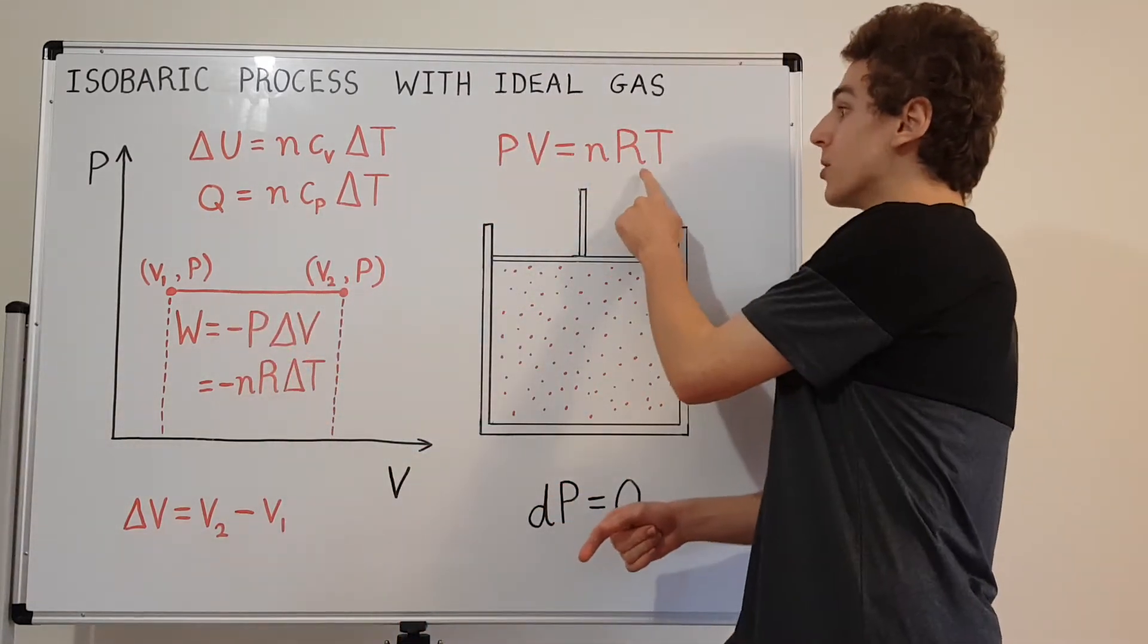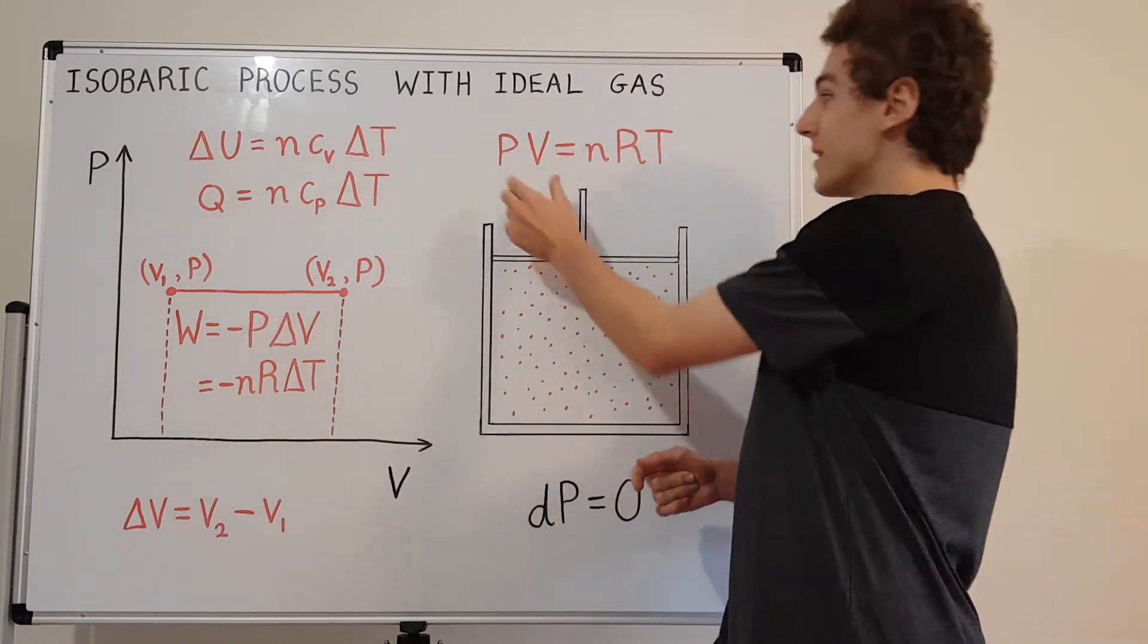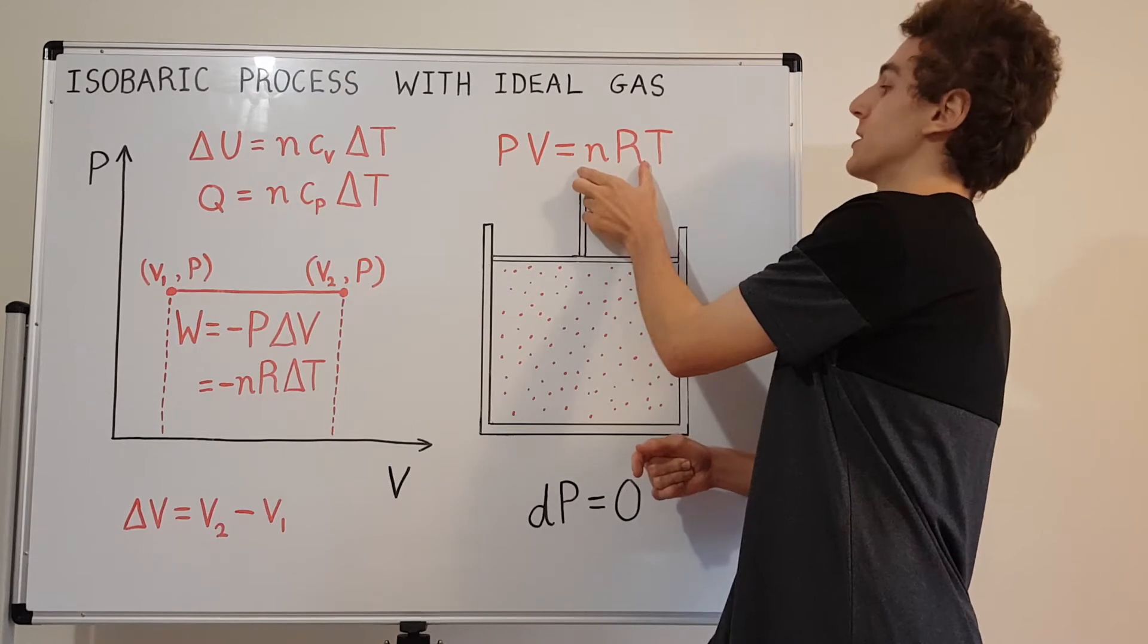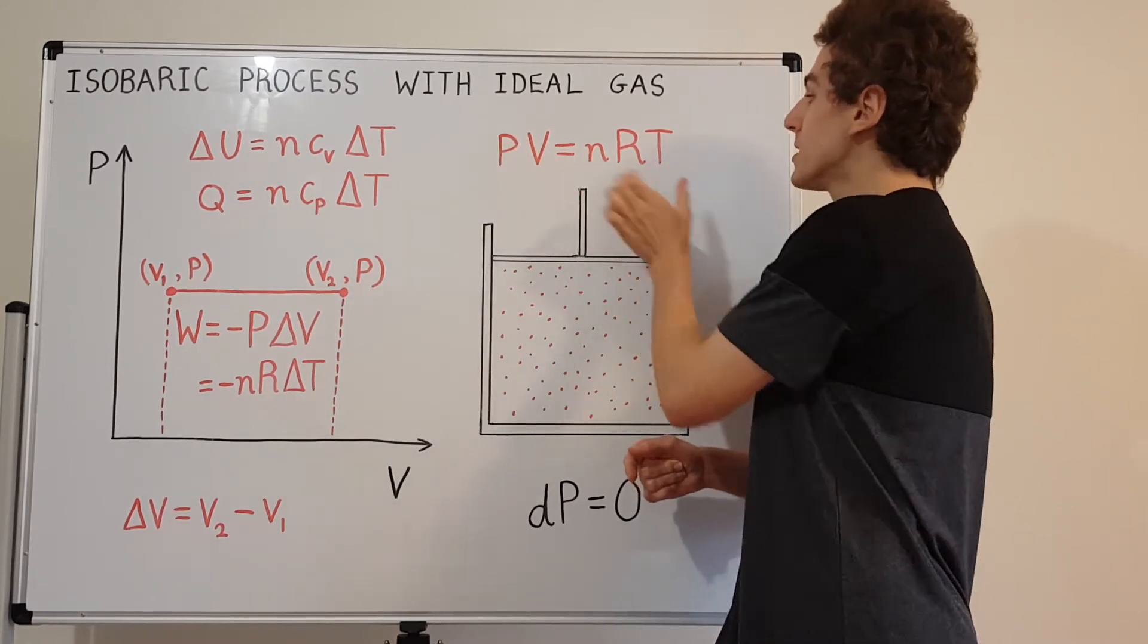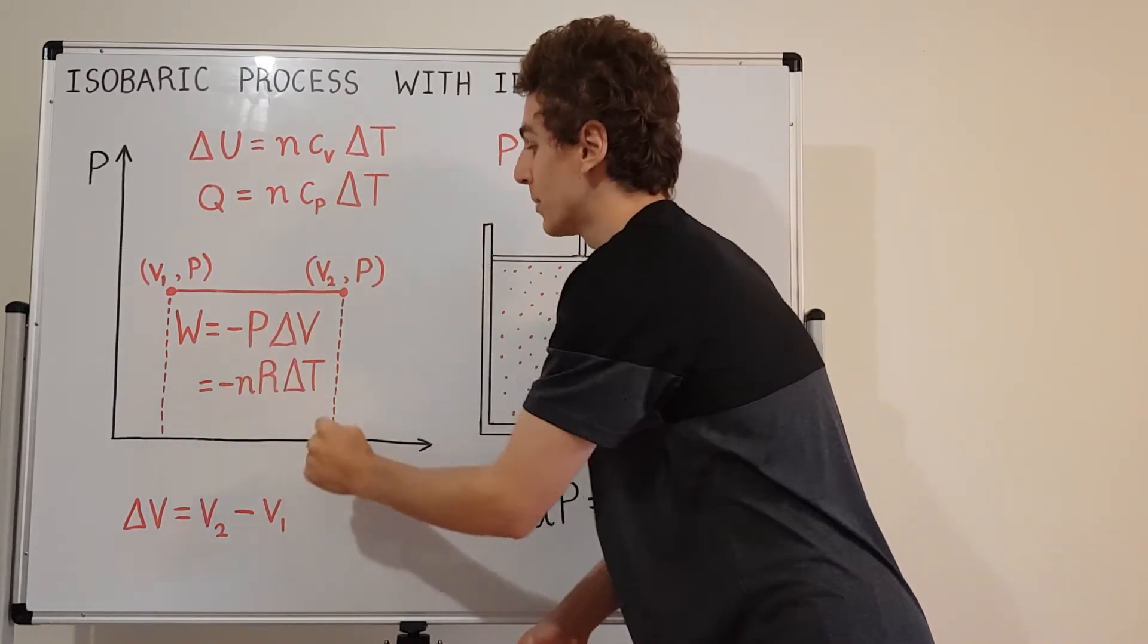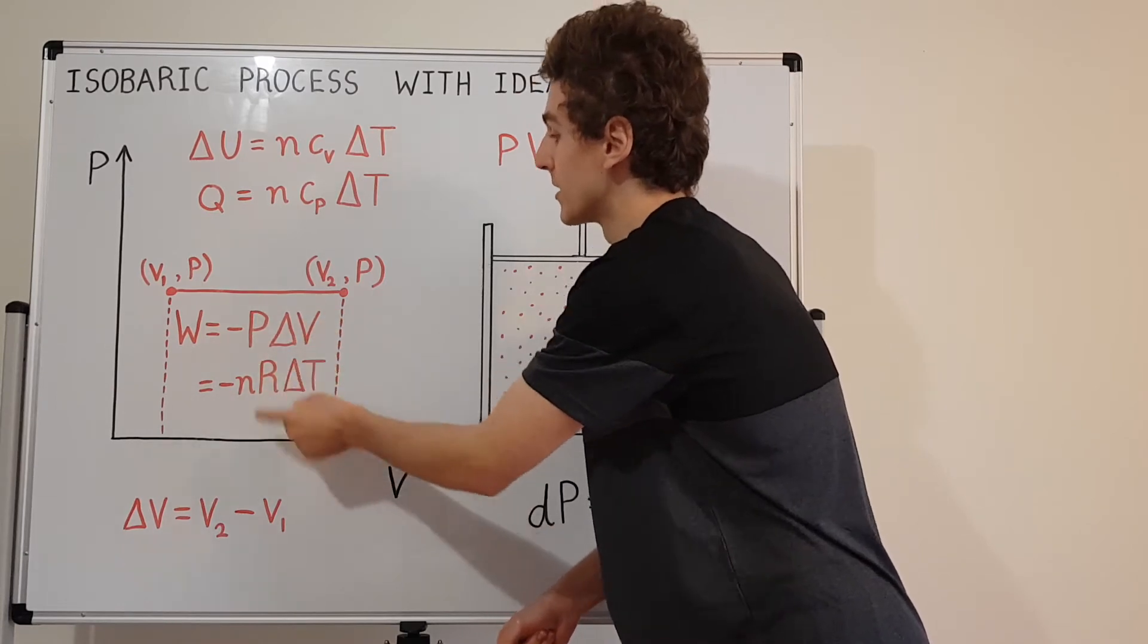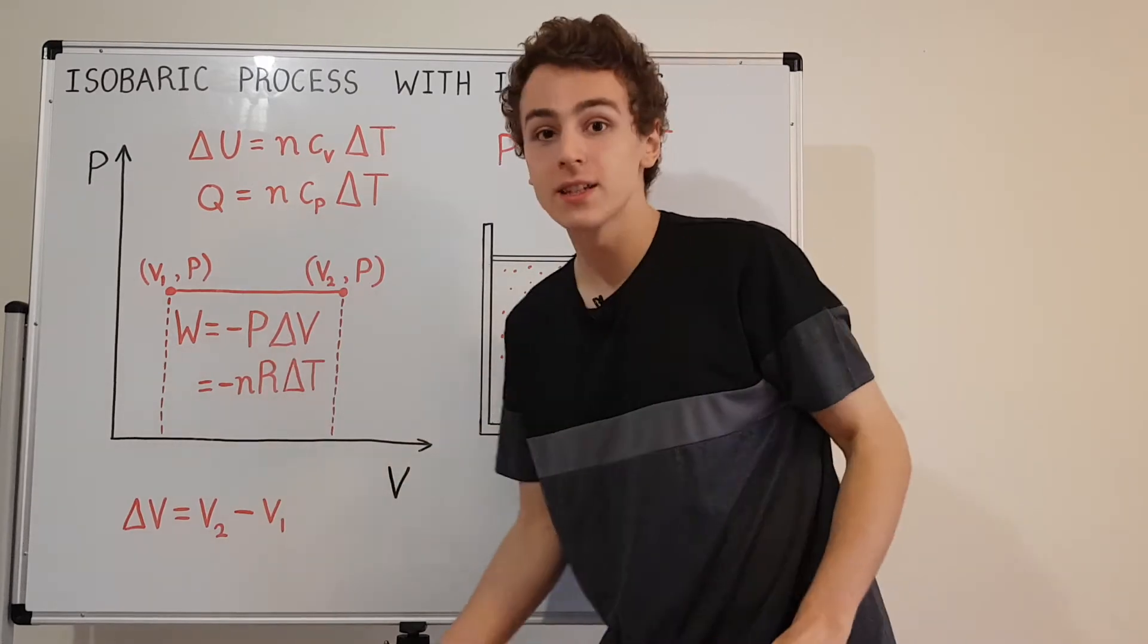But we can also use the ideal gas law to relate P delta V to nR delta T. That's just using this relationship. P is constant and n and R are constant. So if there's a delta V, then there has to be a delta T. And the constant that mitigates these two guys is this nR. So here you have a P, you have an nR. So this is just the ideal gas law that's allowing us to translate between this expression and this expression. You might also notice a negative sign. That's by convention.